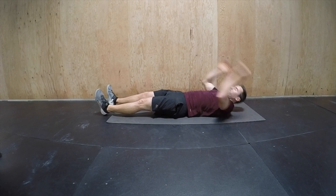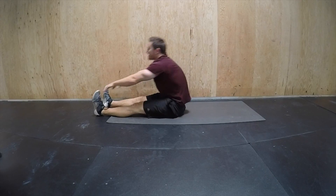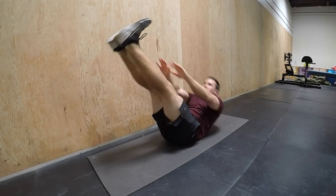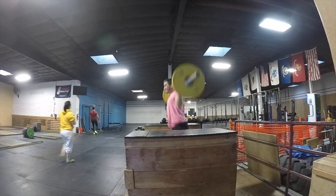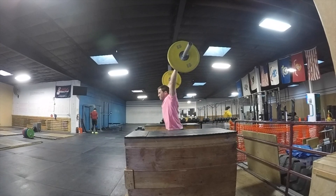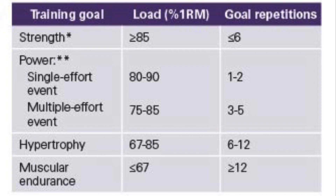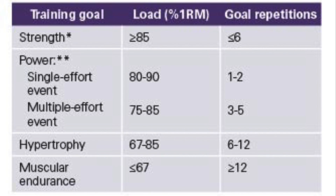Depending on our goals, we prescribe different intensities. For strength, the load should be greater than or equal to 95% of one-rep max with a goal of six reps or fewer — lift heavy and you will get stronger. For hypertrophy, we should be in the 67–85% range performing six to twelve reps. For muscular endurance, intensities are less than or equal to 67% performing greater than twelve reps.